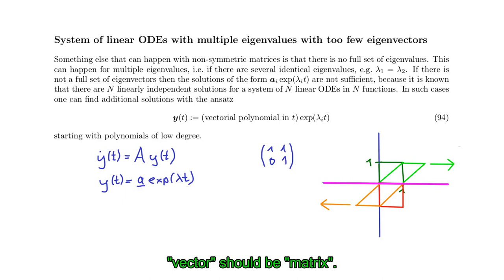Now it is interesting that additional solutions can be generated with the ansatz exponential of lambda t as before, but then multiplied with a vector polynomial in t rather than just an eigenvector. So a second solution might therefore be of the form b plus ct times the exponential of lambda t, where lambda is the degenerate eigenvalue.